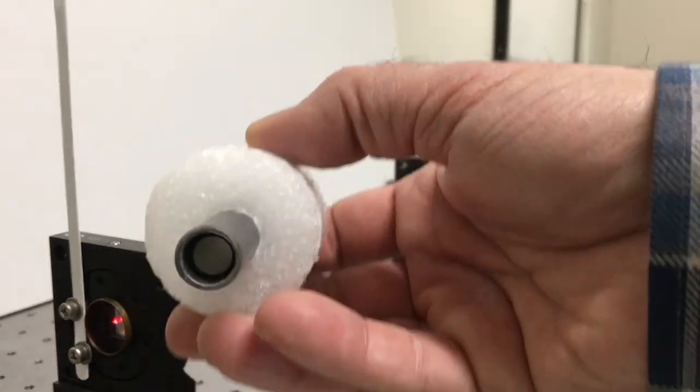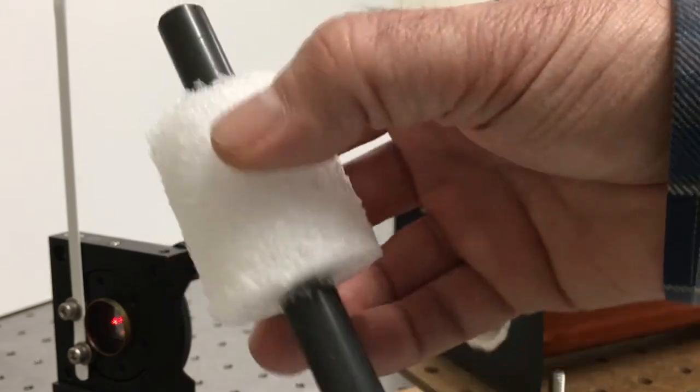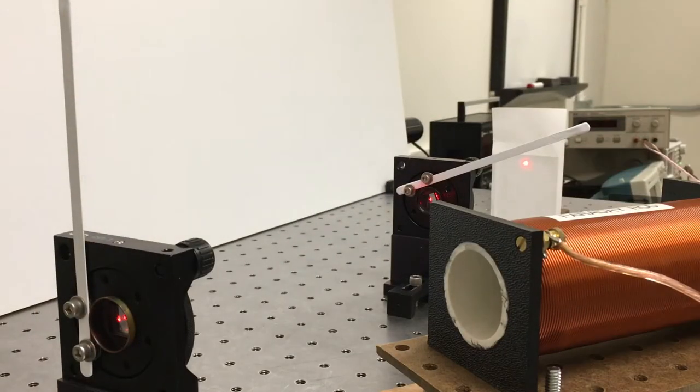Tucked inside the solenoid is a glass rod. I've got another one pulled out here so you can see what it looks like. It's literally just a transparent rod inside a holder so it fits inside the solenoid. So that's already tucked inside the solenoid.